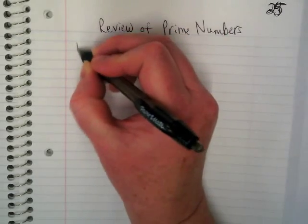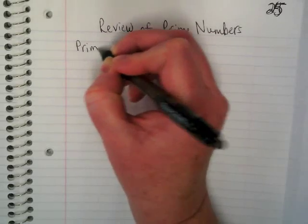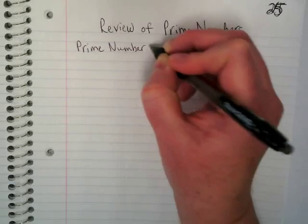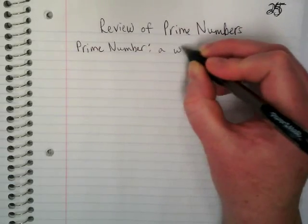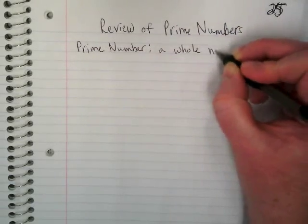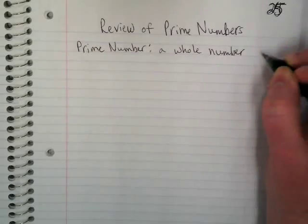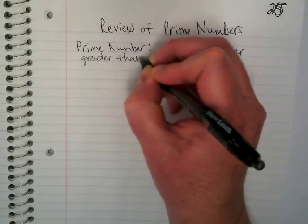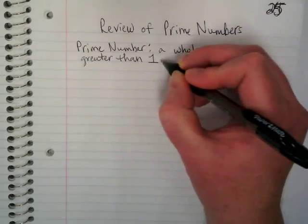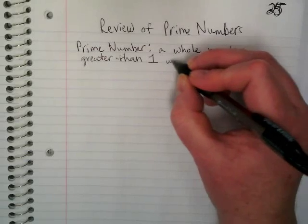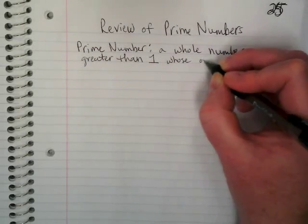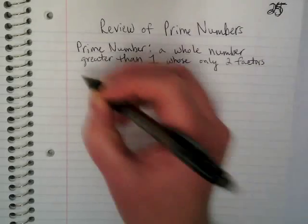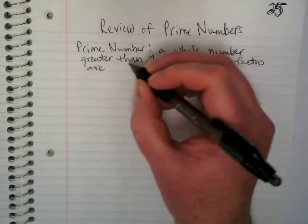First we need a definition. The definition of a prime number: it's a whole number greater than one where there are only two factors — one and itself.